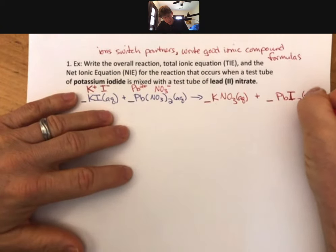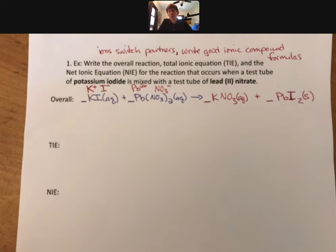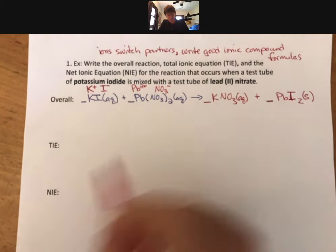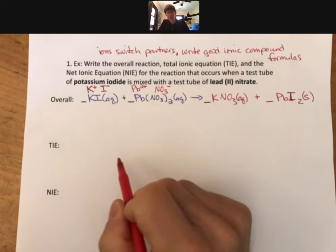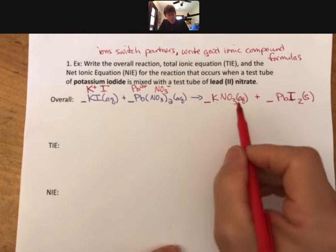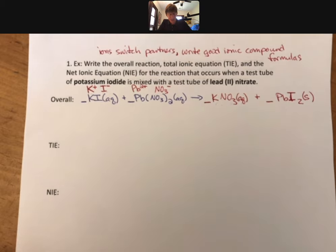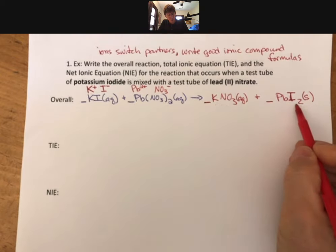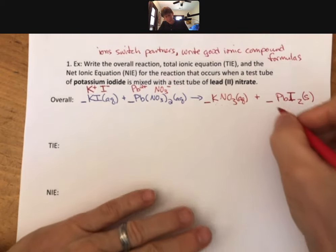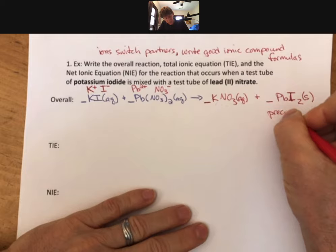Rule number three says all binary compounds of the halogens with metals are soluble except for Pb. And again, we just went through this, but this is going to be our solid. So our process is: switch partners to get the two products, look at the solubility rules, and decide which one of our products is aqueous or solid, soluble or insoluble. And this is what we call our precipitate.